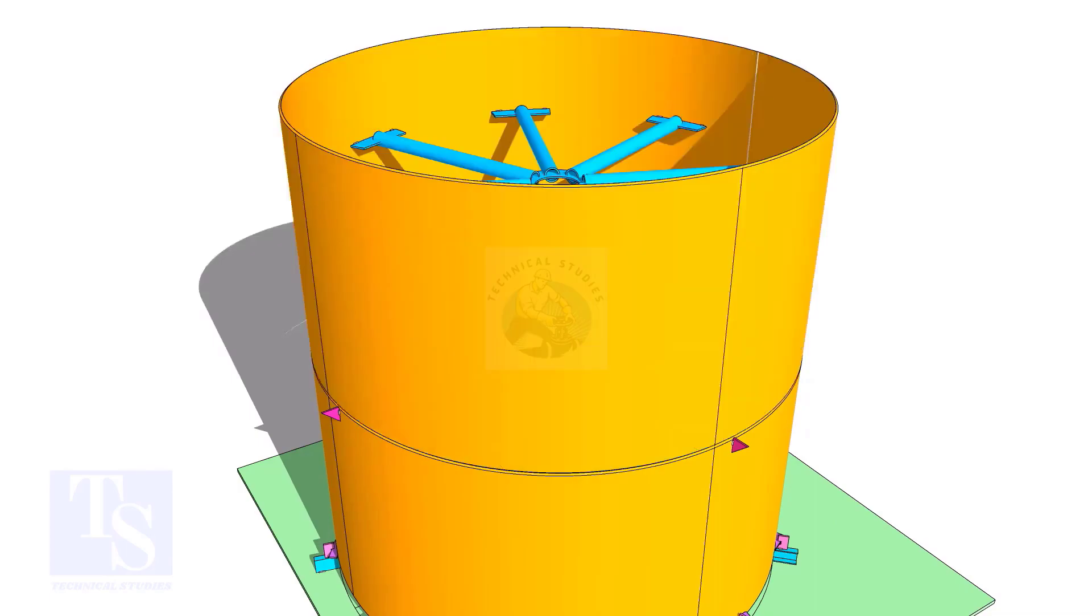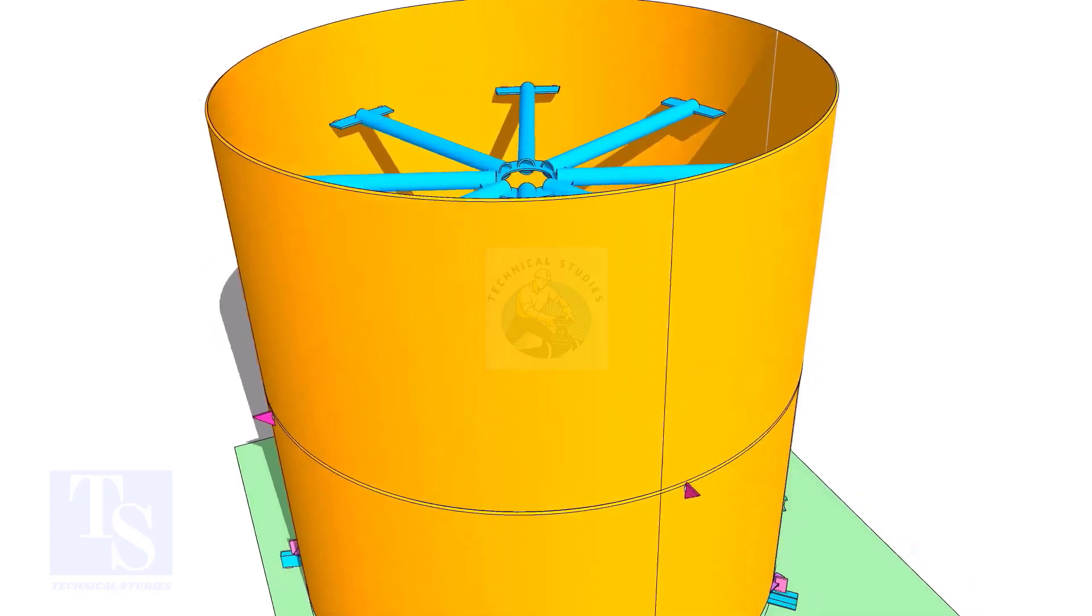Put the top shell on top of the first shell. Most important thing: check the vertical weld line degrees in the drawing and mark these lines carefully.